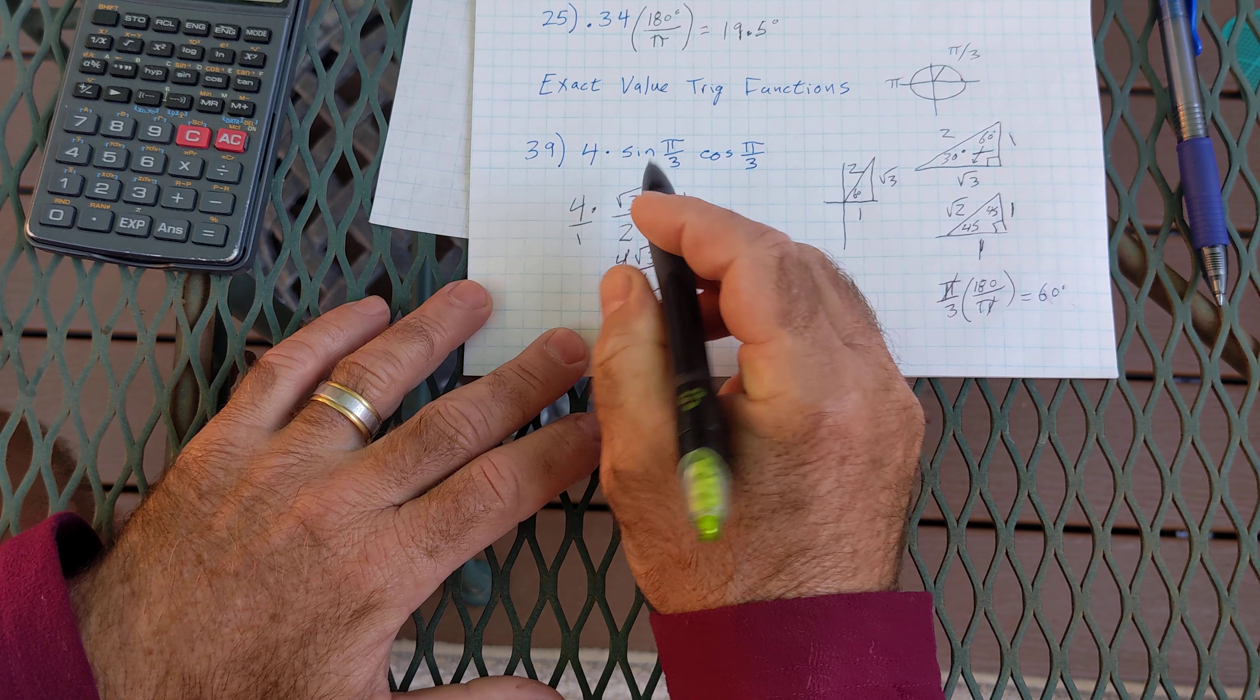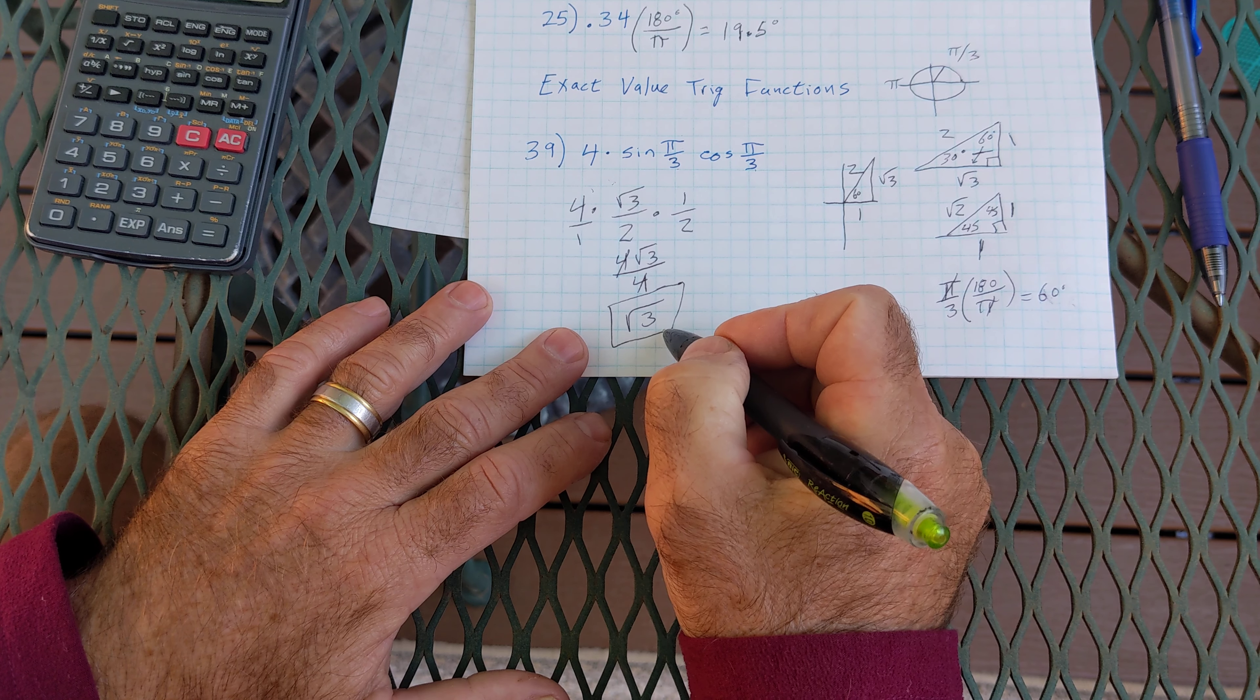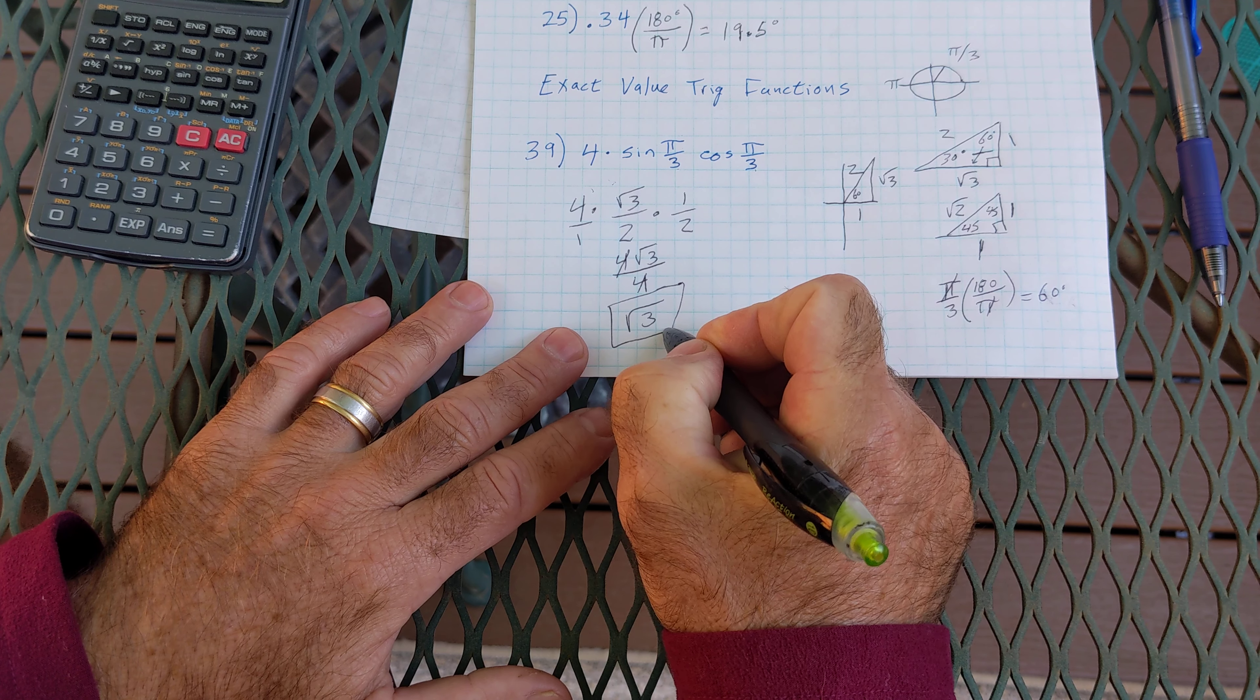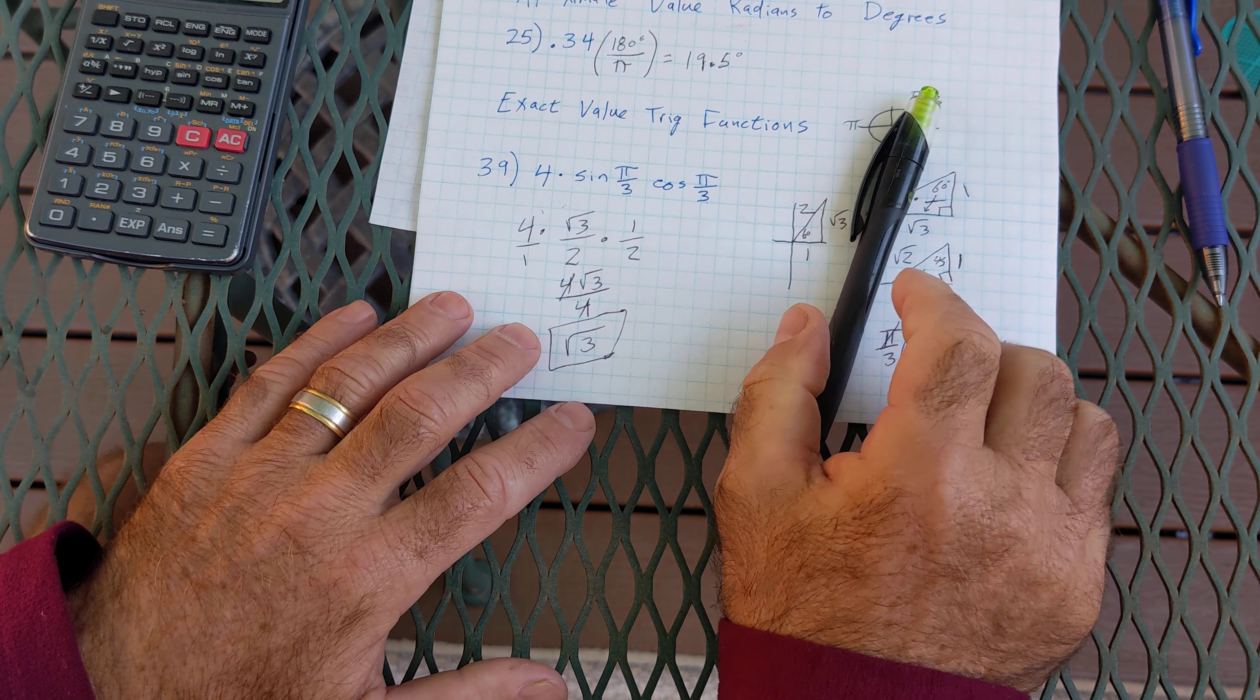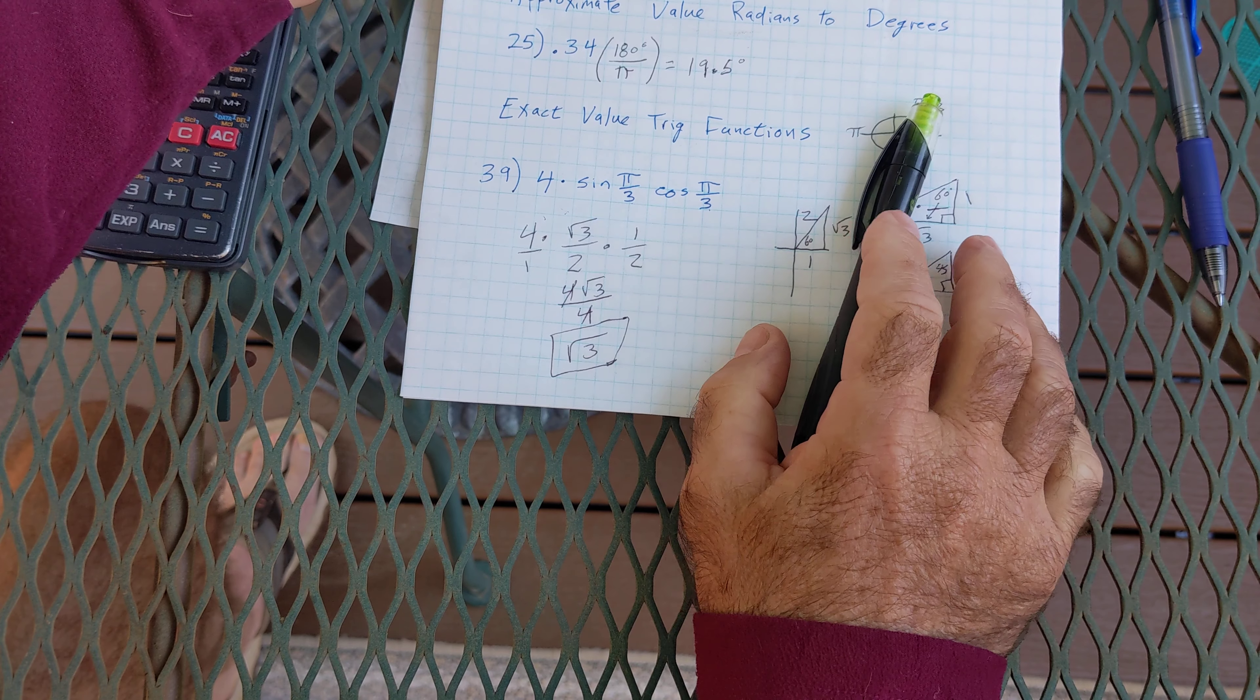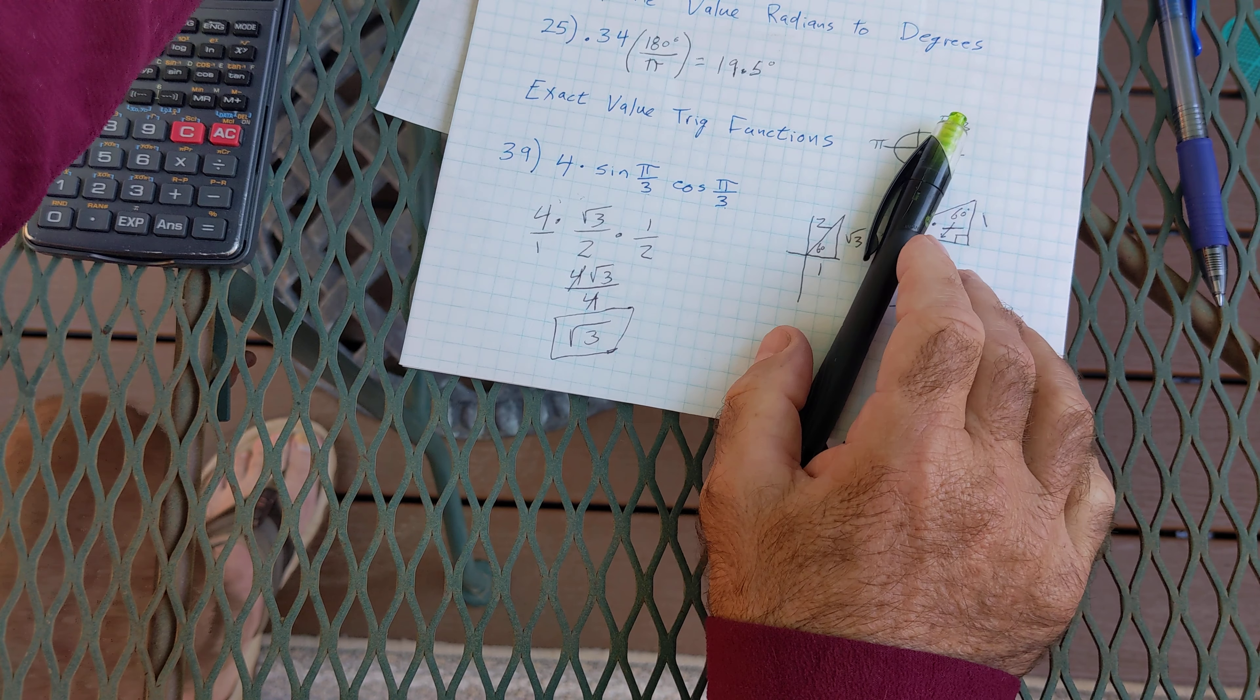So what is the exact value of this trig function here? The answer is root 3. I know there's a ton of information there. It'll come. It's going to take a lot of work, but I'm hoping this video will help you get started converting from degrees to radians, radians to degrees, and then also the difference between exact and approximate value.